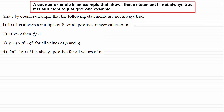I'll do the first one to give you an idea, then leave you to do 2, 3, and 4. You can fast forward the video to check your answers. Now in number 1: 4n plus 4 is always a multiple of 8 for all positive integer values of n. We can see that's true when n equals 1, because you get 4 plus 4 which is 8. And if n equals 3, 4 times 3 is 12, plus 4 is 16 — that's a multiple of 8.